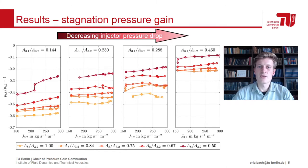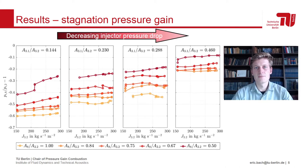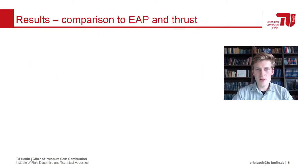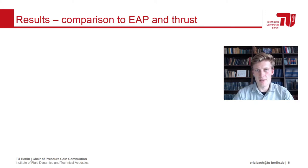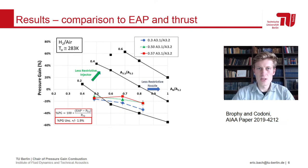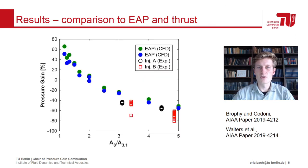But first, it is necessary to verify that our keel probe method is comparable to thrust stand measurements. In order to do that, we are going to look at different published data, which can be converted to EAP and pressure gain using Kemming and Paxton's method. We looked at this graph before, but now it also contains experimental data from Brophy and Codoni. It is also possible to collapse the two important area ratios into just one — the throat-to-injector area ratio. This was first proposed by Walters et al., and the graph then looks like this.